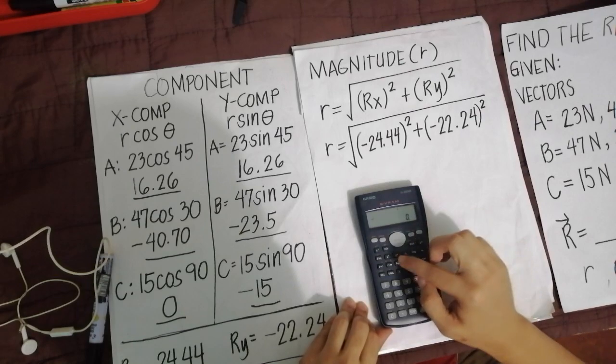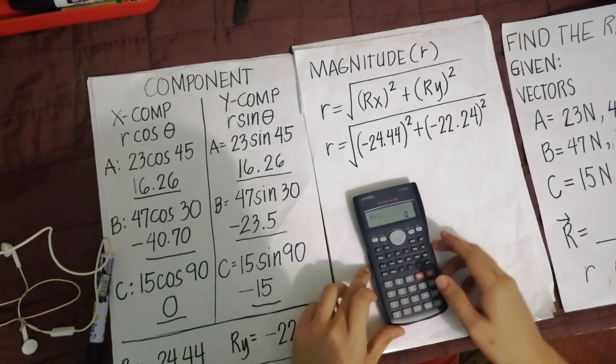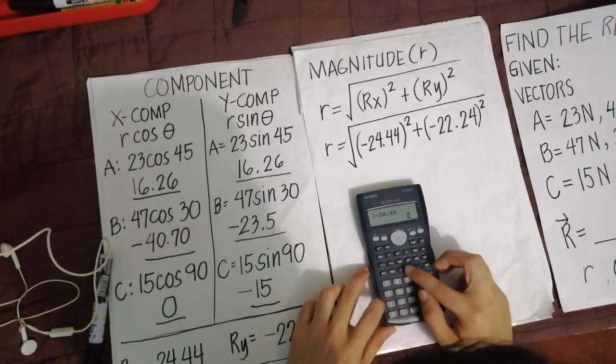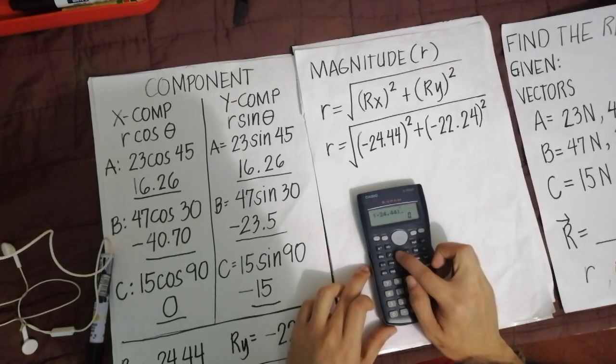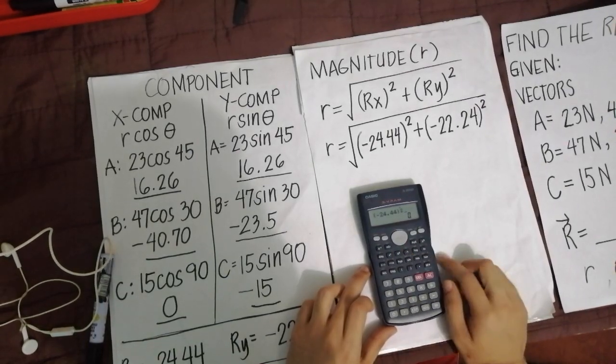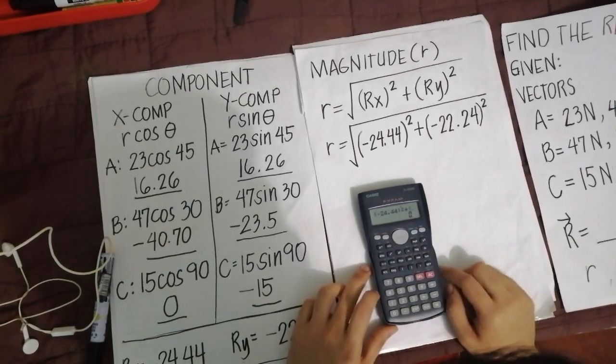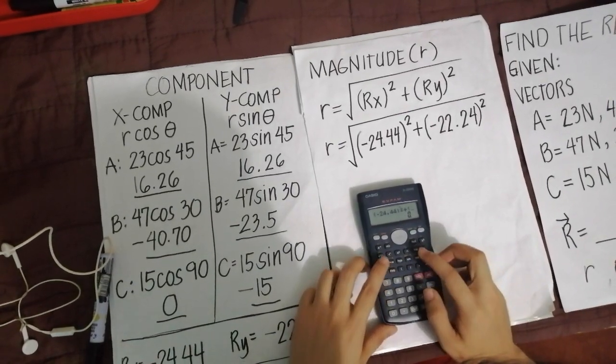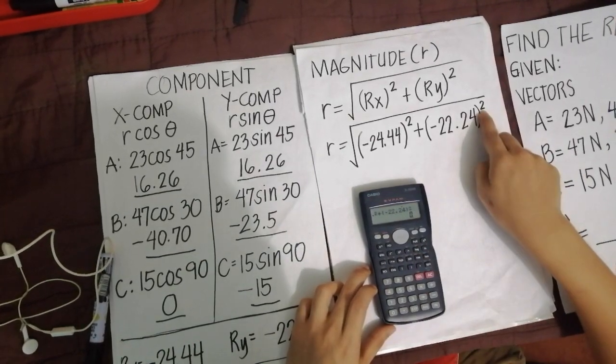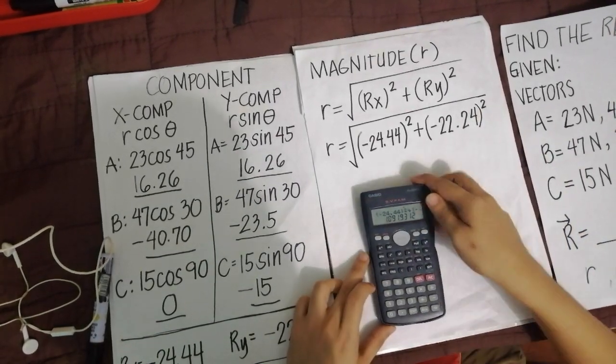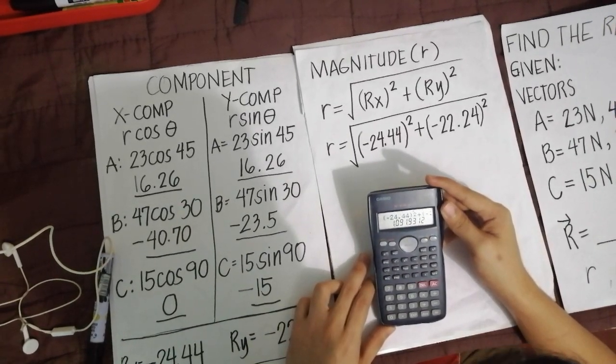So lagay natin, parenthesis. Okay, take note, hindi ko nilagay ng square root. Ito muna ako, pag ganito ang calculator ko. Medyo bulo kasi yung calculator ko nito. So parenthesis. Negative. Negative 24.44. Parenthesis. Raised to 2. Pwede mong gamitin dito yung x squared. Then plus, parenthesis, negative ulit, 22.24. Close parenthesis, then x squared ulit yung raised to 2. Then equal sign ko.